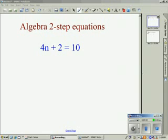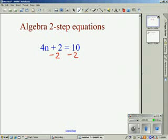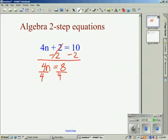The first thing we're going to do is get rid of that 2. So we're going to balance our equation by doing the inverse operation of addition, which is subtraction. We're going to subtract 2 from both sides. These cancel out, and we're left with 4n equals 8. Our next step is to take the inverse operation of multiplication, which is division. We're going to divide both sides by 4. 4 divided by 4 is 1, so we're left with n equals 2.